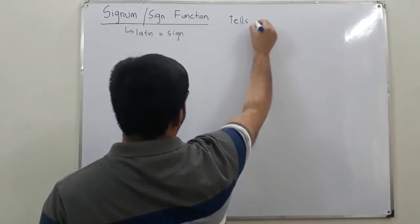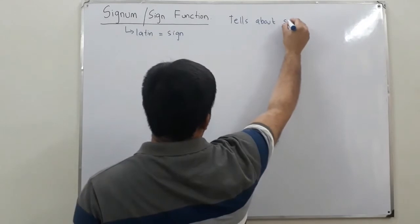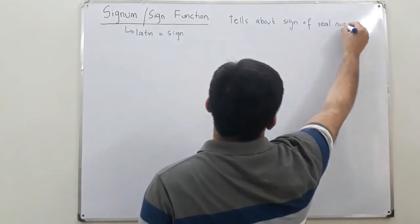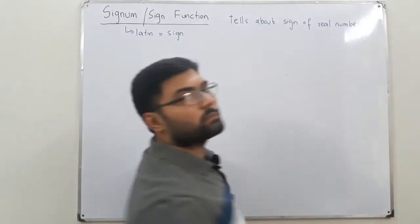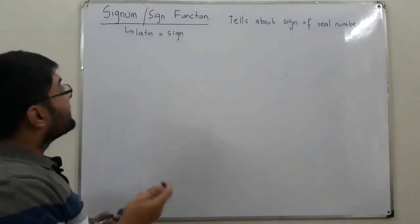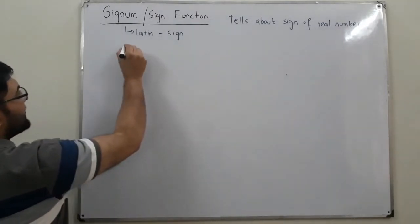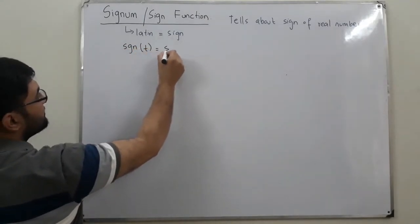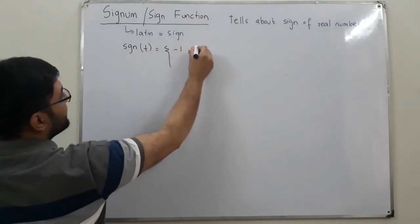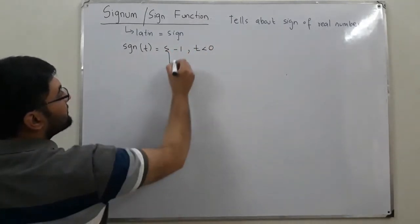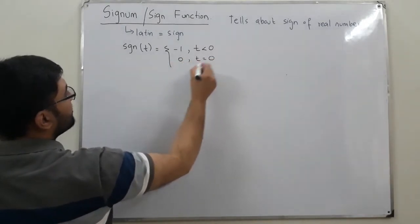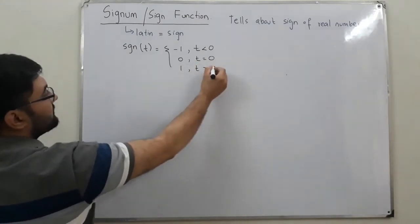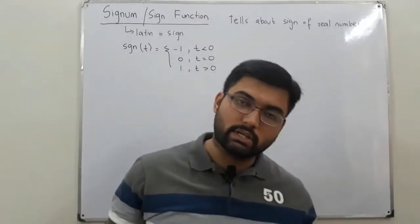It tells about the sign of a real number. It is represented as sgn. Since we are dealing with the continuous time domain, sgn(t) is defined as: negative 1 for t less than 0, equal to 0 at t equal to 0, and positive 1 for t greater than 0. That is the signum function.